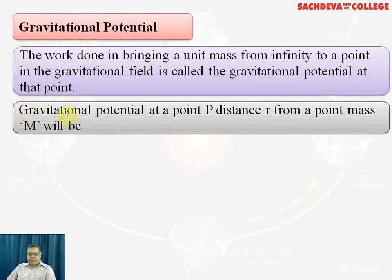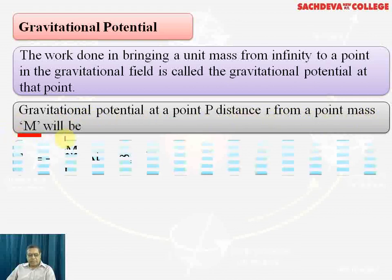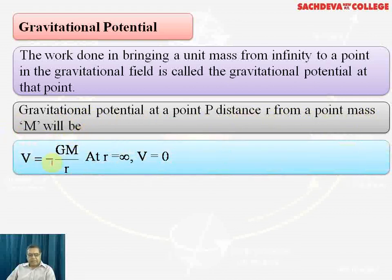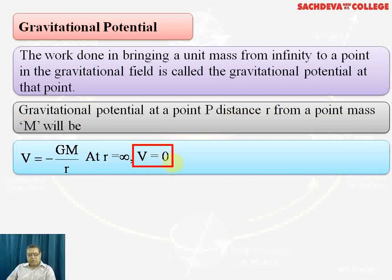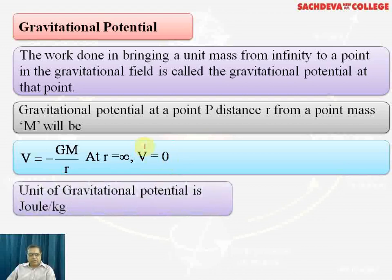Gravitational potential at a point P, at distance r from a point mass M, is given by V = -GM/r. If r is infinity, the potential equals zero. The unit of gravitational potential is joule per kilogram, and its dimensional formula is M⁰L²T⁻².